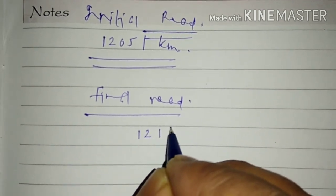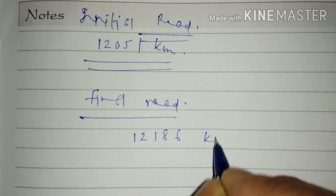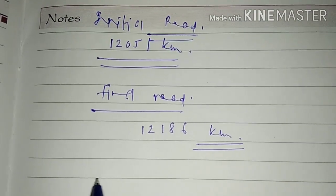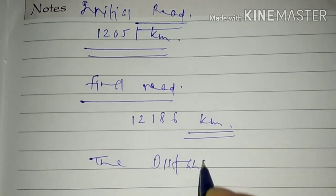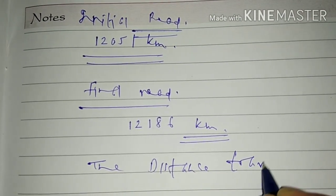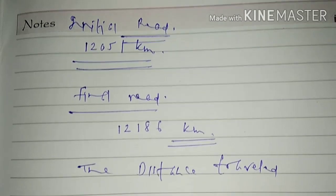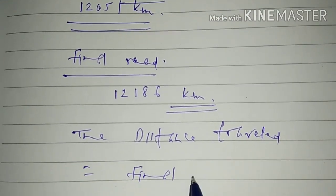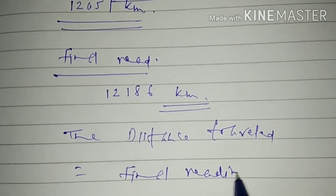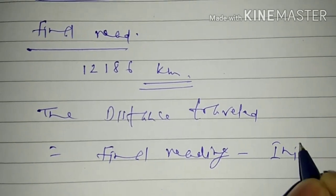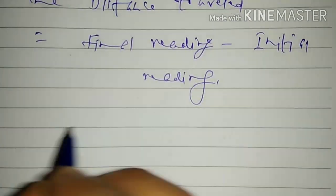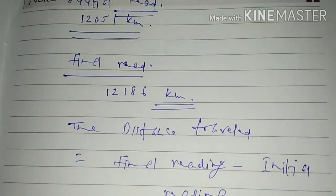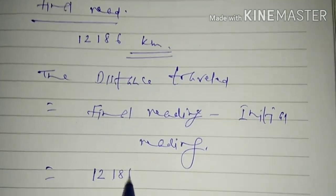Then what will be the distance traveled? In this case, the distance traveled is equal to final reading minus initial reading.